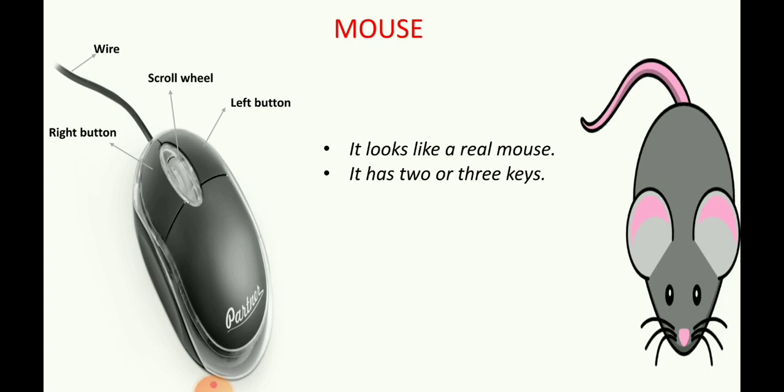Our computer mouse tail is called as wire. So which are the parts of the mouse? Left button, right button, scroll wheel, and wire.